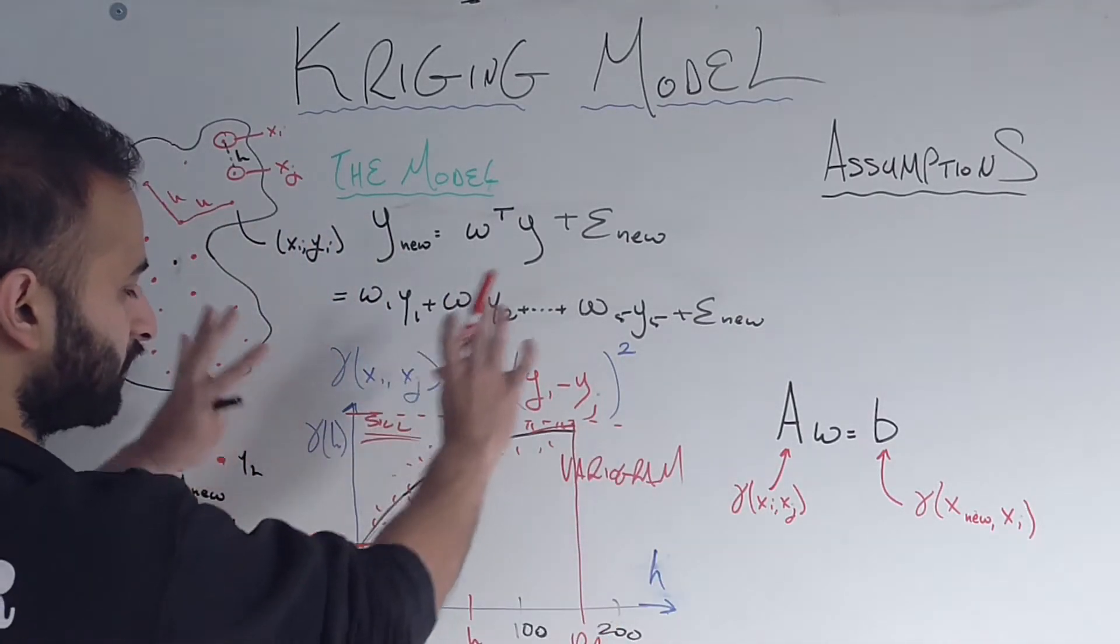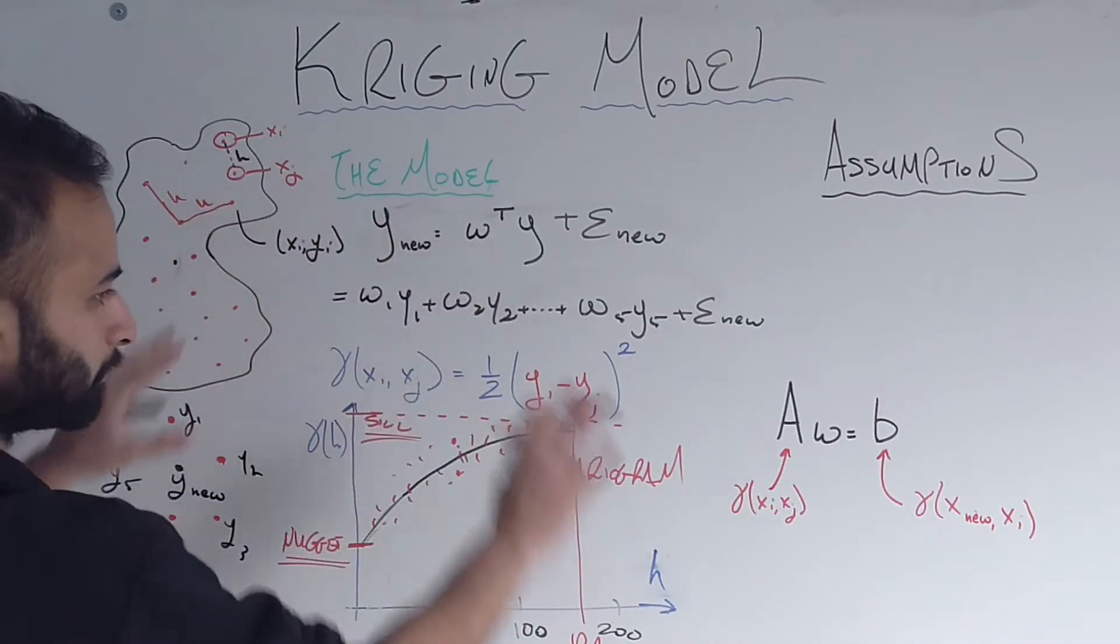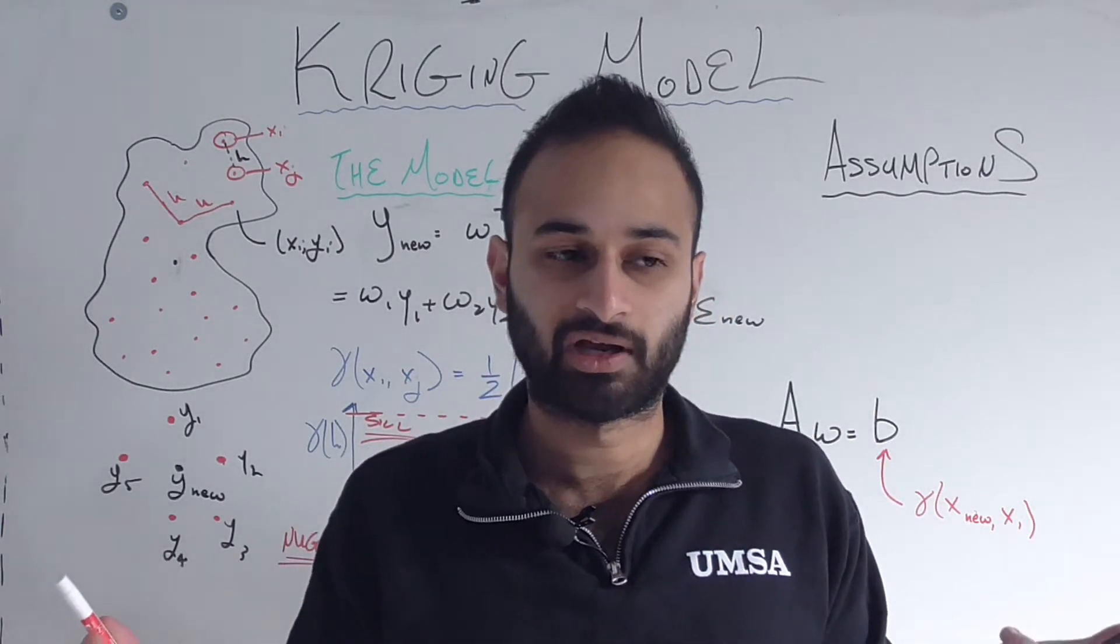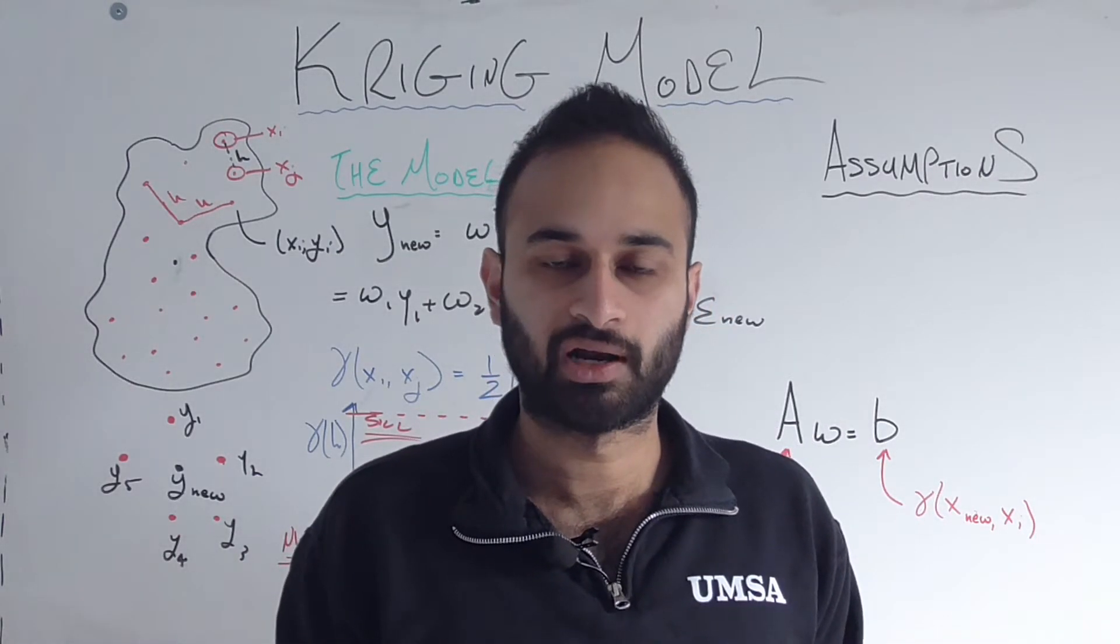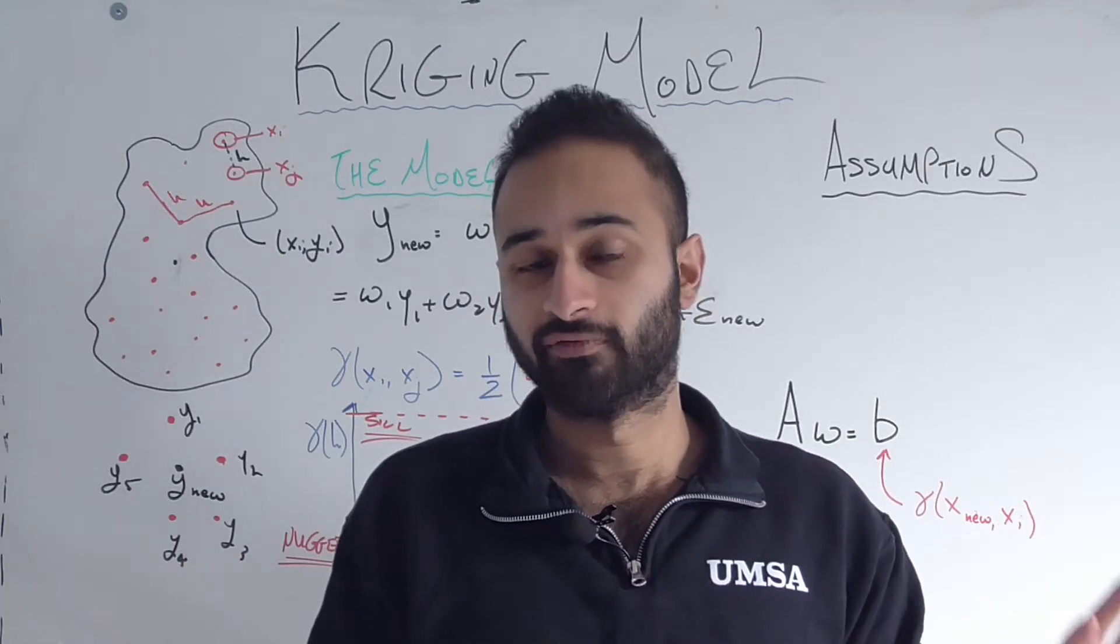So why did we go through this whole discussion of the variogram? Now we're going to tie this variogram back to our Kriging model. I thought about going through the math behind the Kriging model, but I did make that video, even but it got a little bit convoluted. So I want to give you kind of the watered down version. And if you still want me to go through all of it, go ahead and leave a comment below.